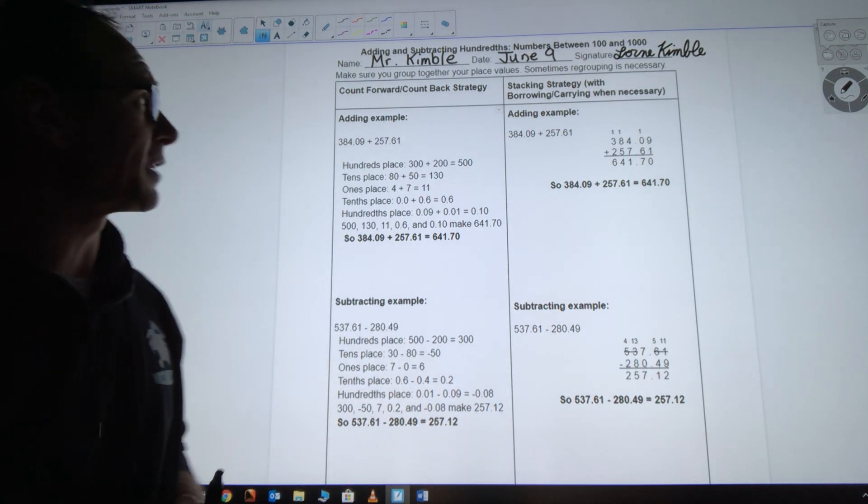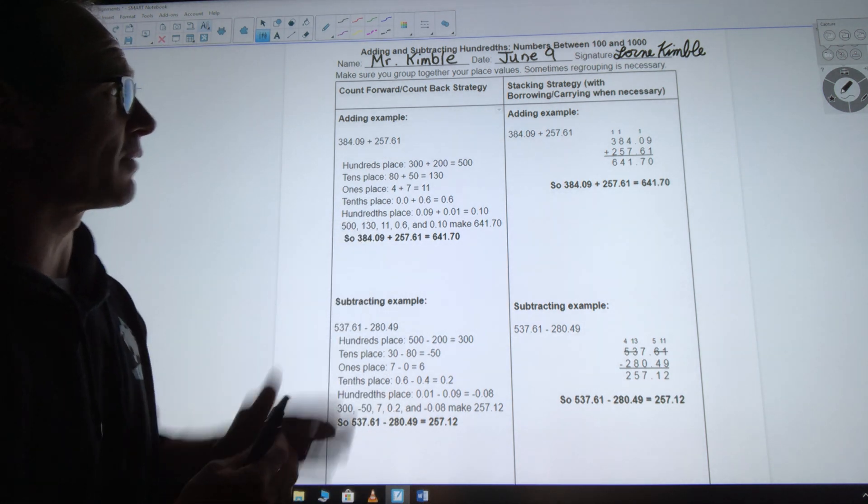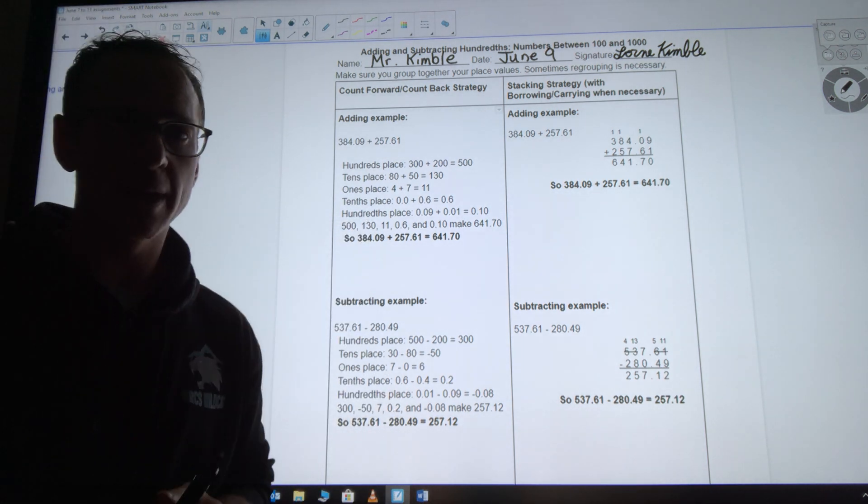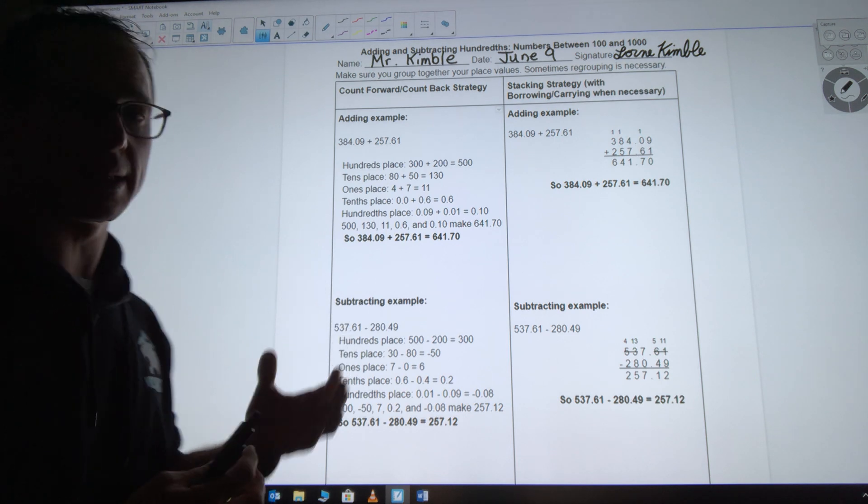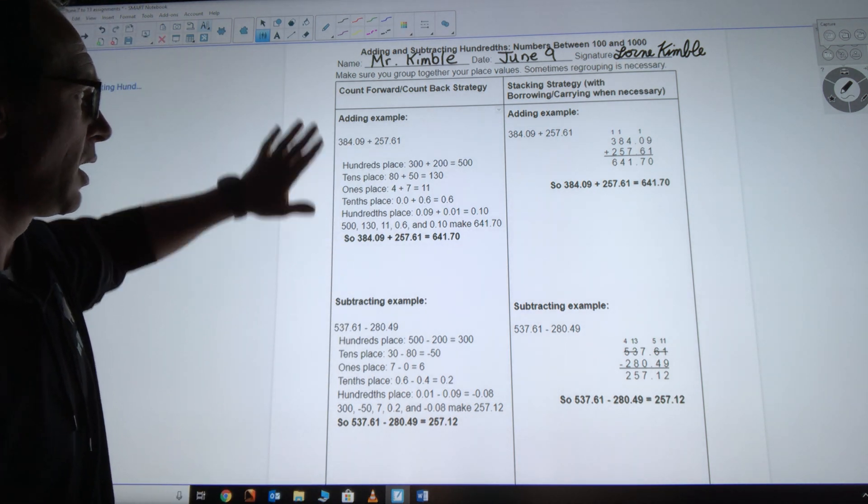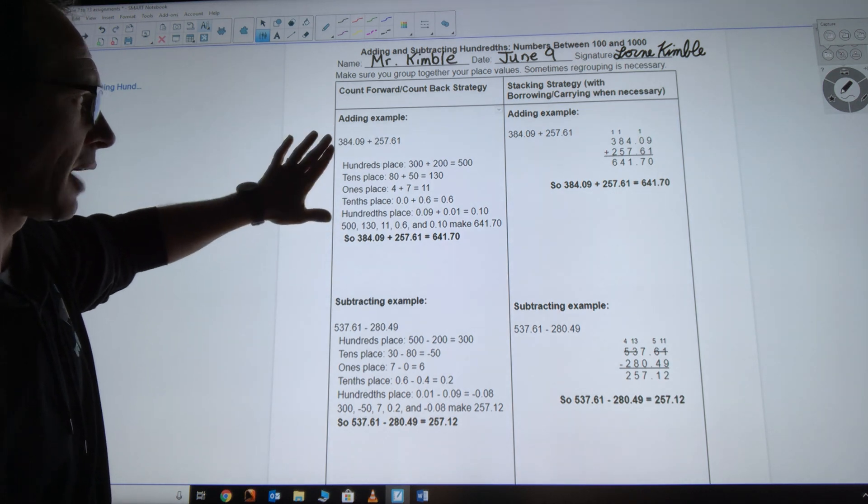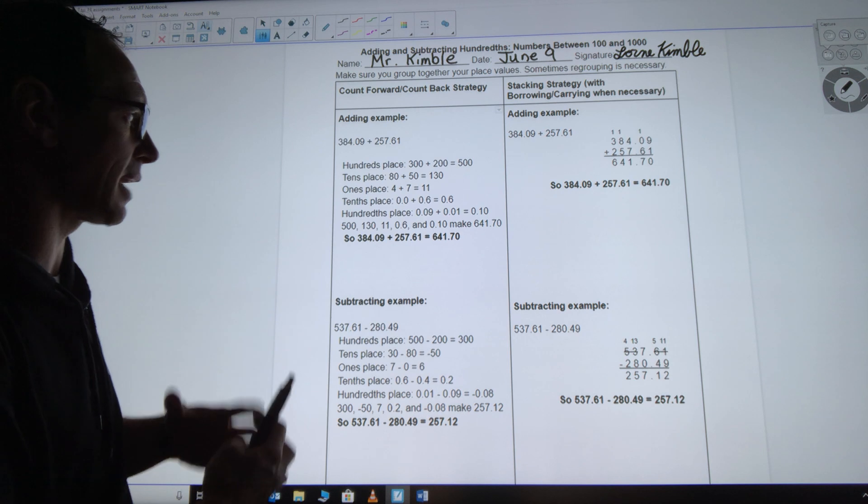All right guys, we're going to continue with adding and subtracting into the hundredths place and our numbers are just getting bigger. So now we have numbers between 100 and 1000, but we continue with those same ideas of grouping our place values. So if we're doing the count forward strategy, if we're adding, we have our hundreds placed together, tens, ones, tenths, hundredths.